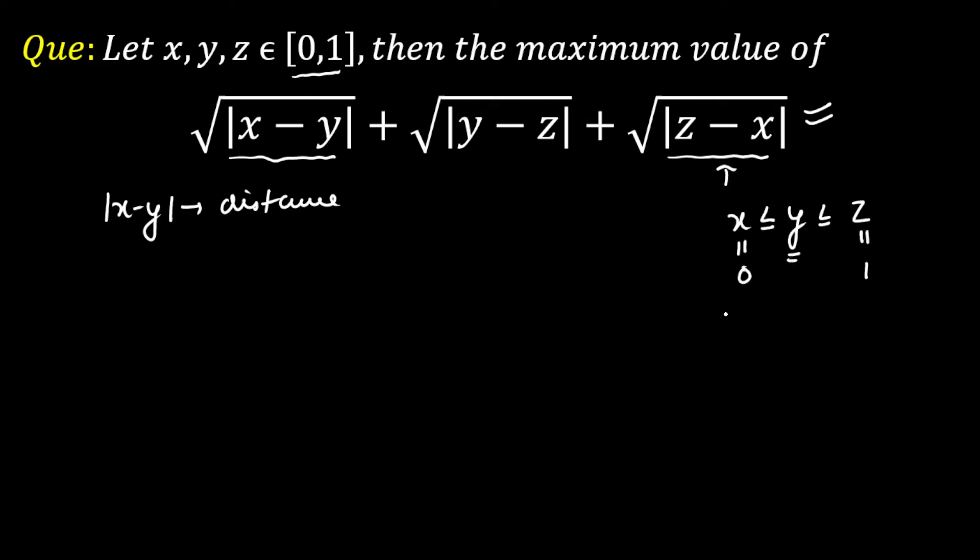Now y will be floating between 0 to 1 in order to maximize this term. Okay, so I'll write the remaining expression. The remaining expression is root over here you'll get mod of y, that is y, plus next expression will be root over mod of y minus 1 here, and this term will be equal to 1 here.